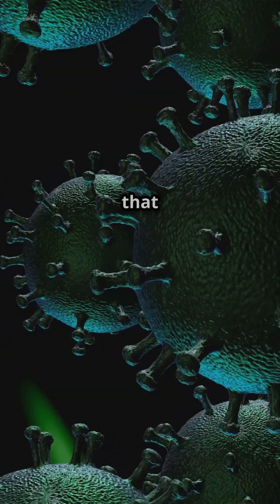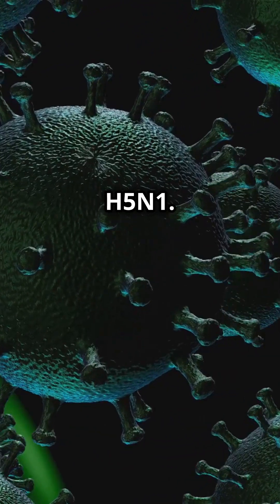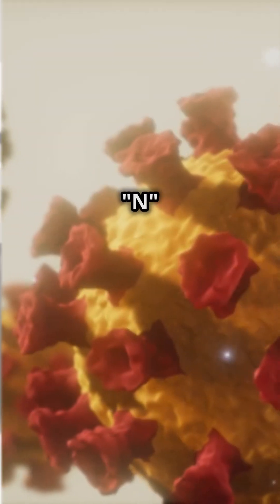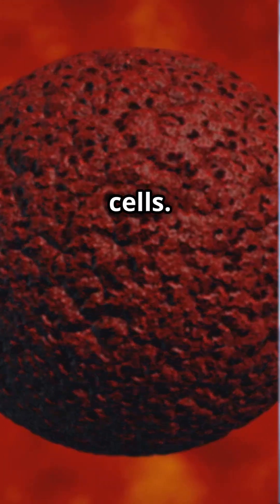The bird flu variant that had been spreading was known as H5N1. The H stands for hemagglutinin and the N stands for neuraminidase. These are proteins on the outside of the bird flu virus that help the virus attach to and infect cells.